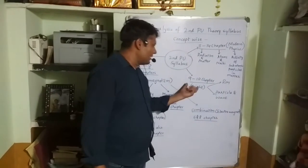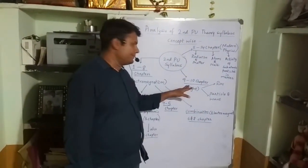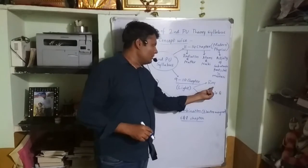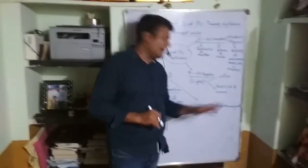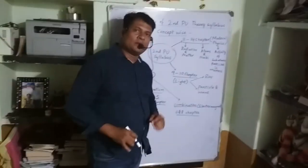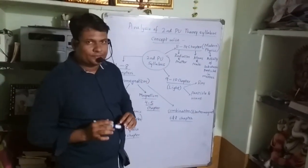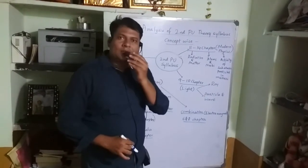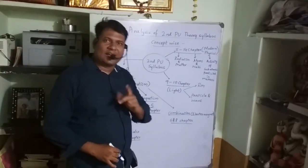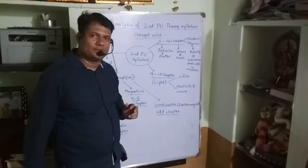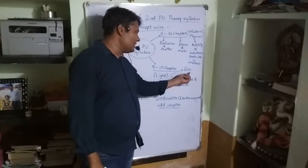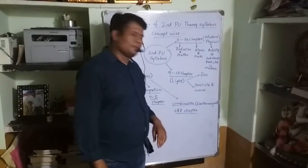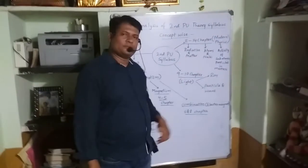The second part of the second PUC syllabus contains Chapters 9 and 10, which are all about Light. Light is further divided into two subdivisions: one part discusses the ray nature of light, covered in Chapter 9 (Ray Optics and Optical Instruments), and another part discusses the particle nature and wave nature of light. Some scientists say light has both particle and wave nature, called 'wavical,' which is covered in Chapter 10 (Wave Optics).